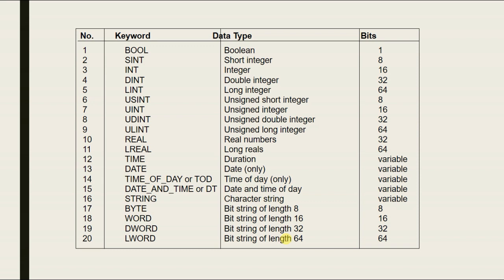The important part is the data type keywords. You can use Boolean (Bool), SINT (short integer), INT (integer), DINT (double integer). Data types by bit size: Bool is 1 bit, SINT is 8 bit, INT is 16 bit, DINT is 32 bit, LINT (long integer) is 64 bit. Knowing these lets you use the program.